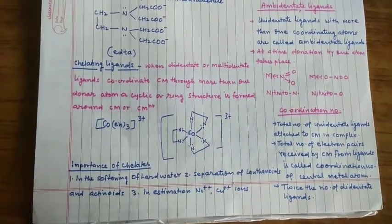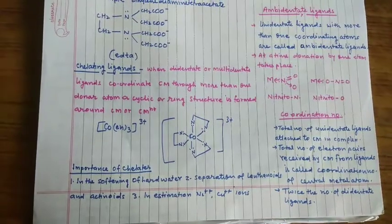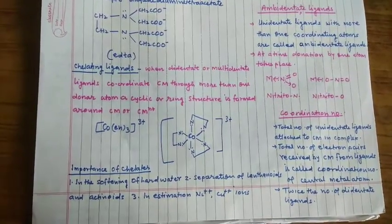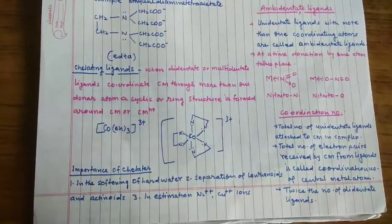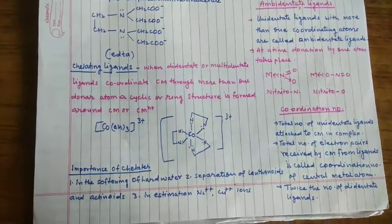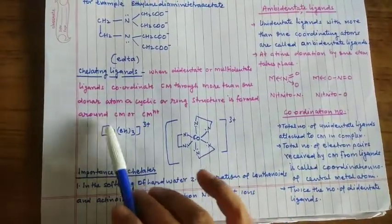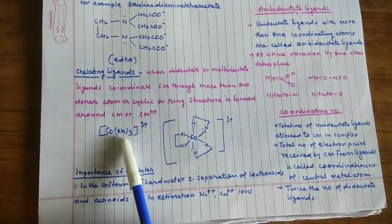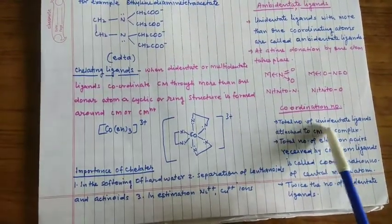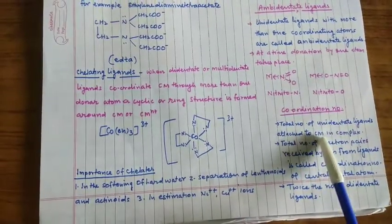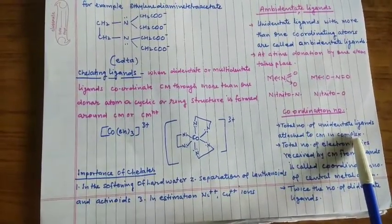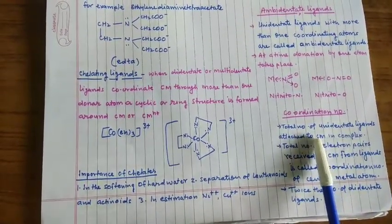अब चलो अब coordination number क्या है। तो coordination number जानने के लिए सीधे आपको square bracket देखना है। Square bracket को हम coordination sphere बोलते हैं। जैसे ये square bracket के अंदर क्या लिखा हुआ है, वो उसका coordination number determine करता है। Total number of unidentate ligand attached to CM in the complex, वो उसका coordination number होगा।